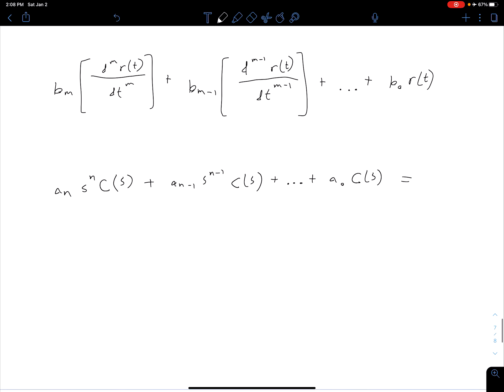So that's going to be equal to, and now we do the exact same thing on the other side. So we have b sub m, which is again just going to be a constant coefficient, times s to the power of m times capital R(s). No other terms because our initial conditions are zero. So that's it for this term here.